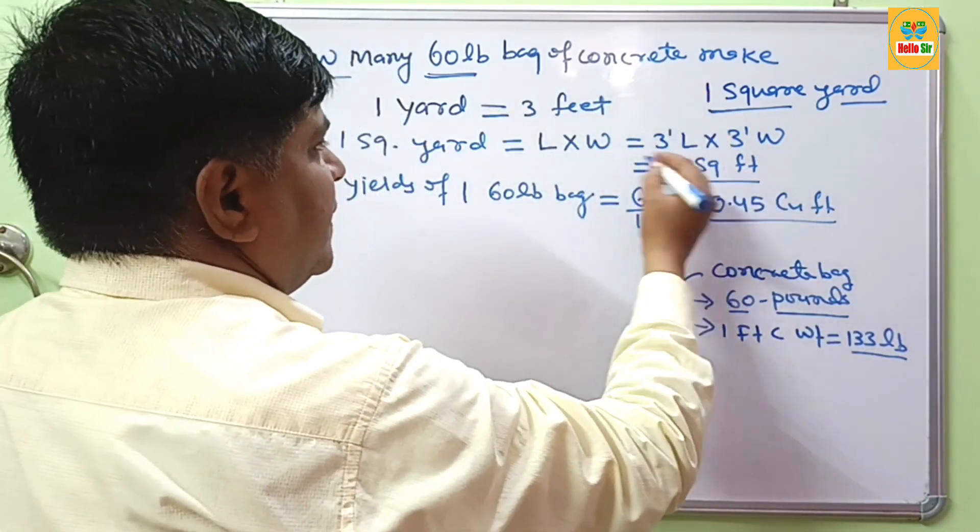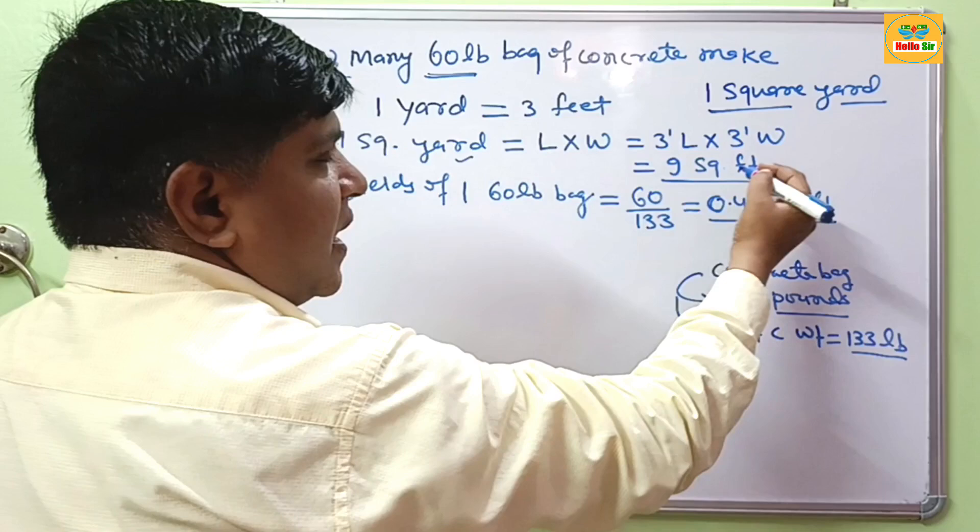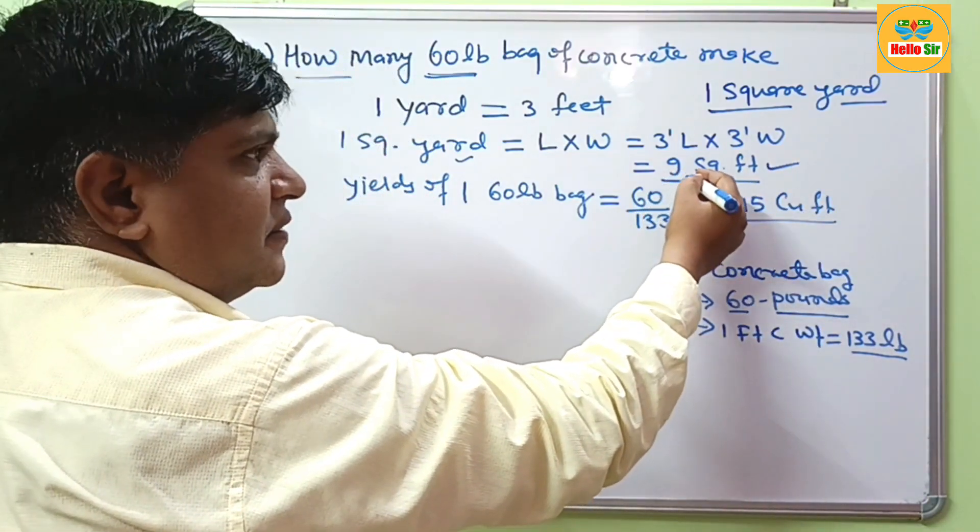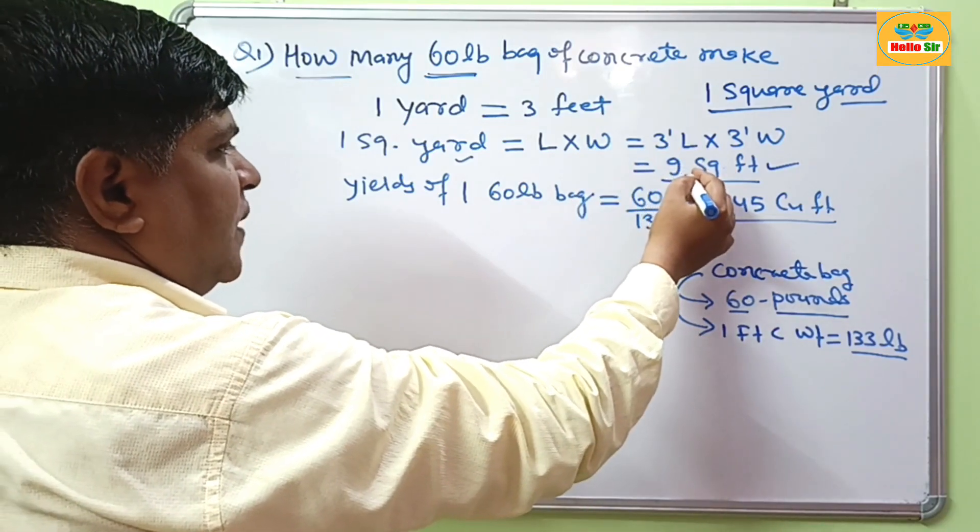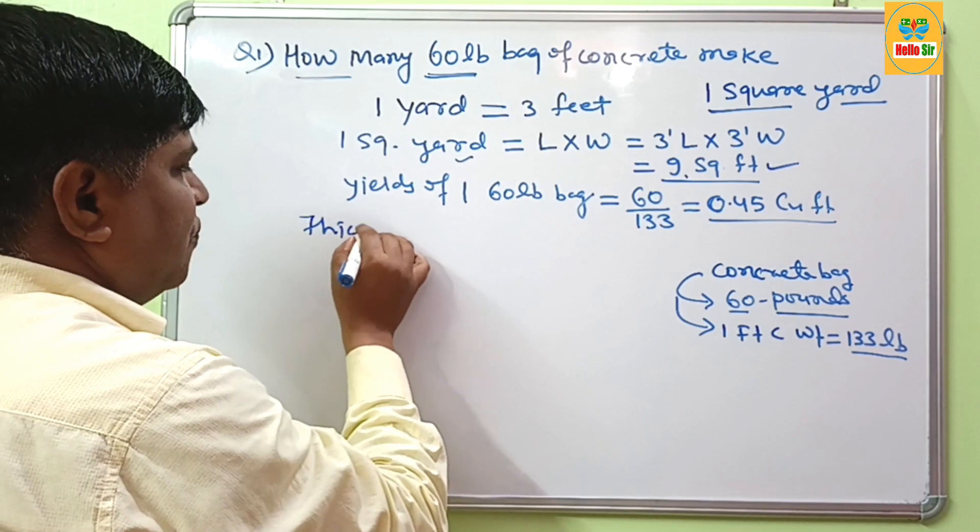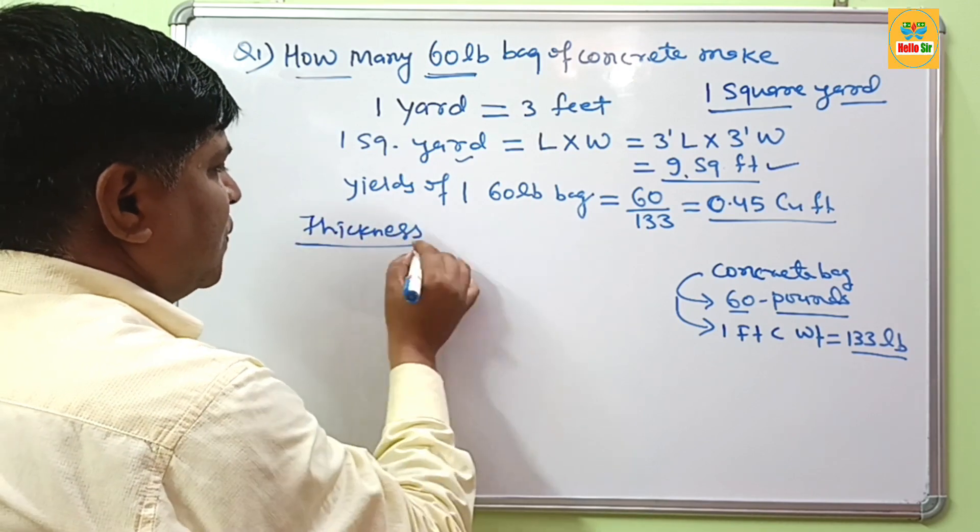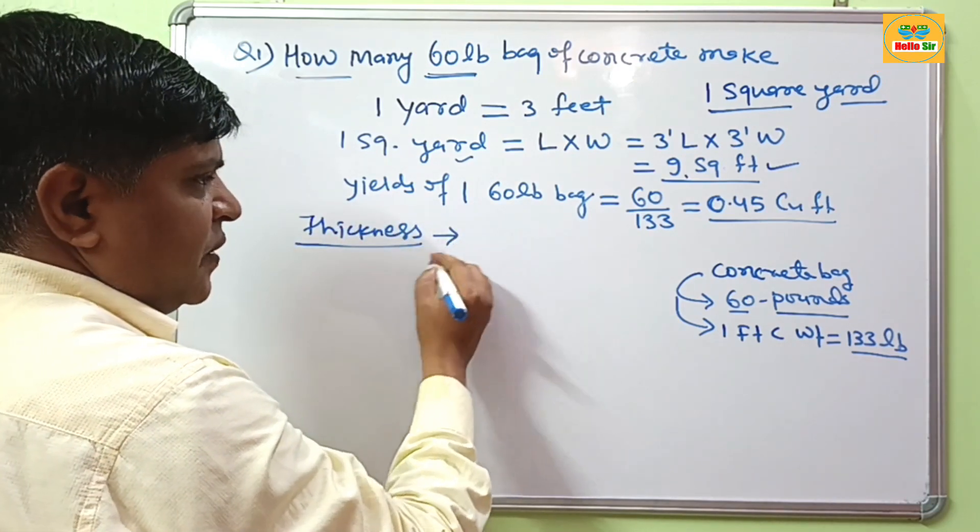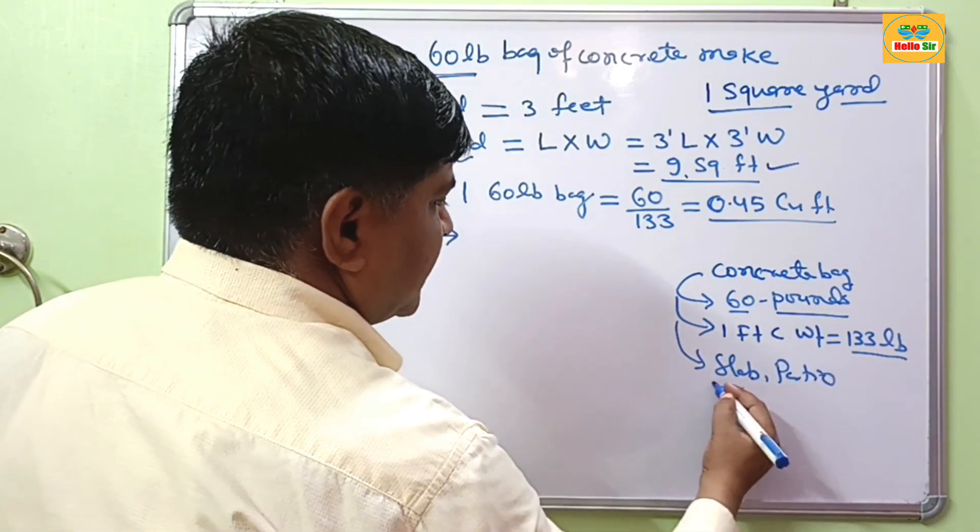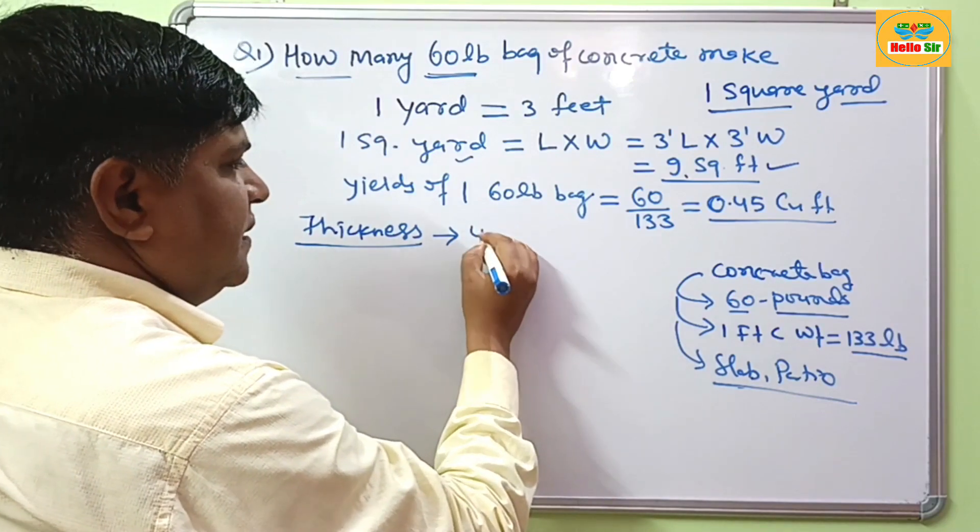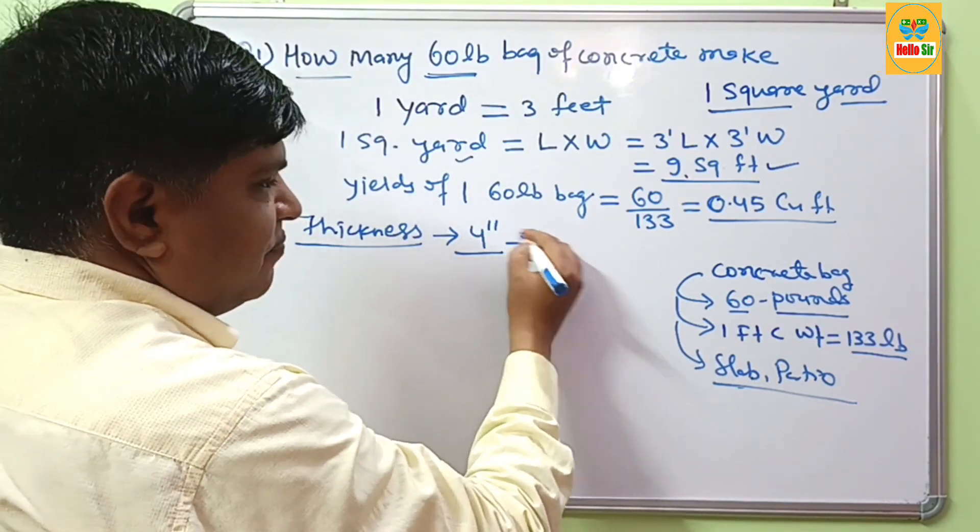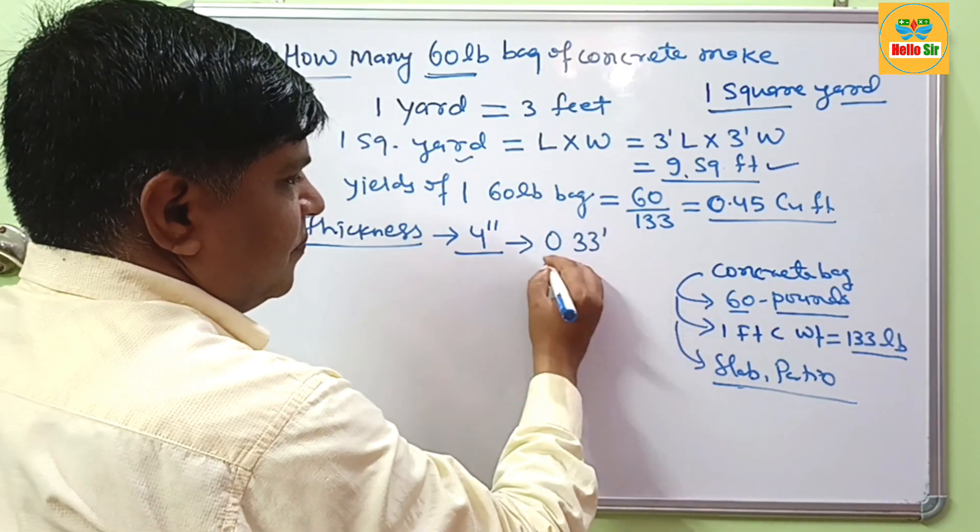And here you have given square yard or either 9 square feet. Then you find this volume. And if you want to calculate volume, then thickness of concrete structure is required. How much your concrete may dig? Normally your slab and base thickness of this structure is maybe 4 inches. If you convert this in feet, this will become 0.33 feet.